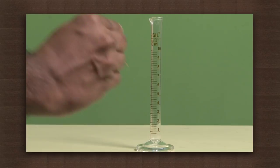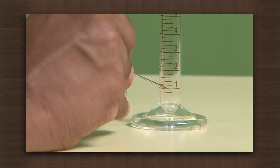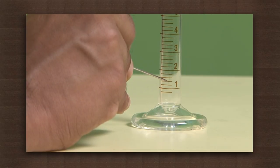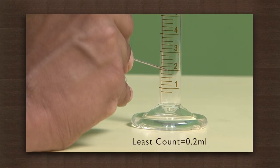Now take the measuring cylinder. This is the one-milliliter mark and this is the two-milliliter mark. There are five divisions between them and hence the least count is one-fifth of a milliliter, which is 0.2 milliliters.